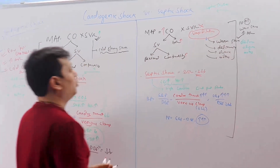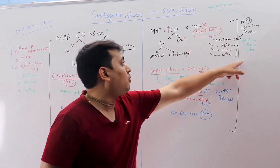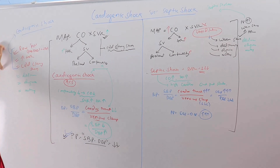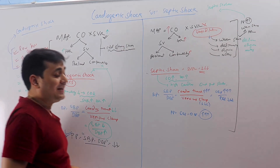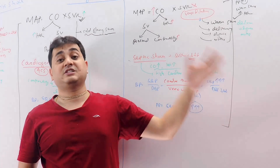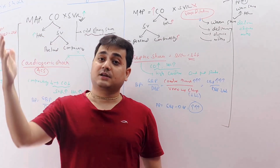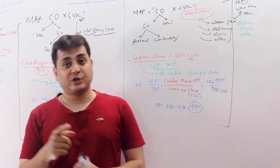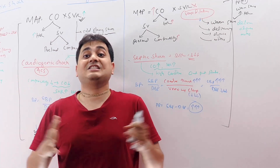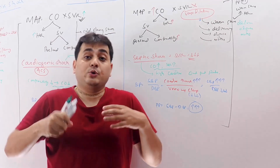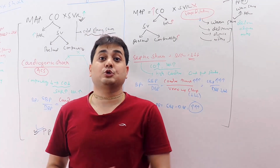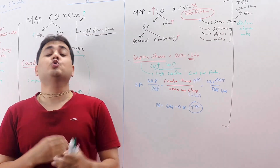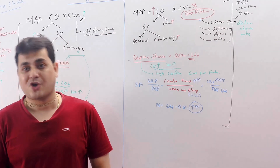To compare: delirium, oliguria, and mottling are present in both conditions. The key differentiators are pulse pressure and skin temperature. High pulse pressure with warm skin indicates septic shock; low pulse pressure with cold clammy skin indicates cardiogenic shock. You do not need to wait for specific laboratory investigations — just check the blood pressure, touch the skin, and check the heart rate. In the next class, we'll discuss how to choose vasopressors in different kinds of shock.